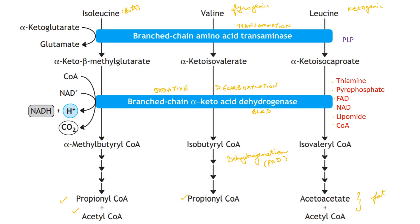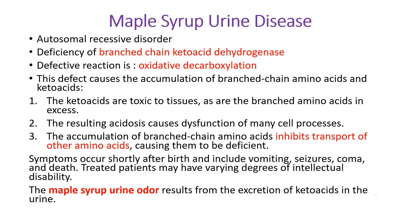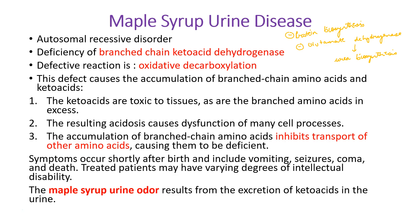Deficiency of BCKD enzyme results in a defect in oxidative decarboxylation, causing maple syrup urine disease. There will be accumulation of branched-chain amino acids and their keto acids, resulting in impairment in transport and function of other amino acids. This reduces protein biosynthesis and also inhibits the enzyme glutamate dehydrogenase, which is very important for oxidative deamination useful in urea biosynthesis. The branched-chain amino acids competitively inhibit this enzyme. The disease results in acidosis, lethargy, convulsions, mental retardation, coma, and finally death within one year after birth.